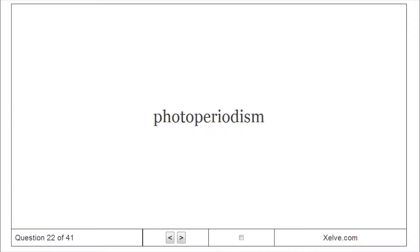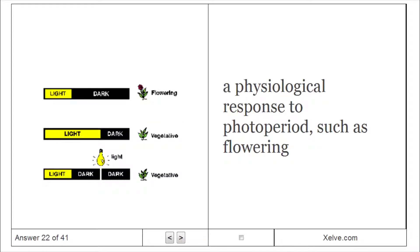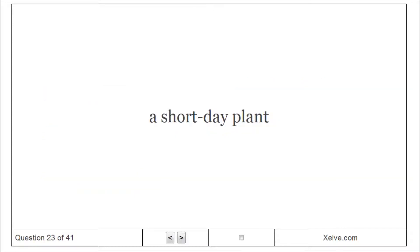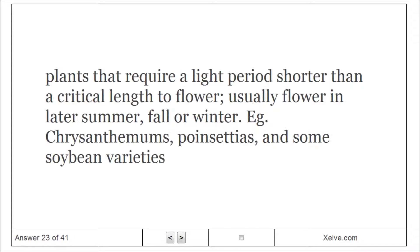Photoperiodism: a physiological response to photoperiod such as flowering. A short-day plant requires a light period shorter than a critical length to flower, usually flowering in late summer, fall, or winter, e.g., chrysanthemums, poinsettias, and some soybean varieties.